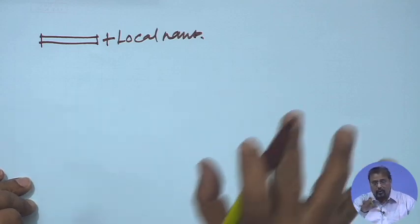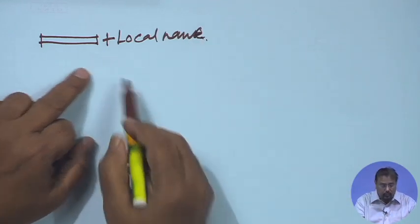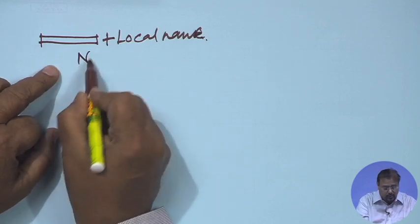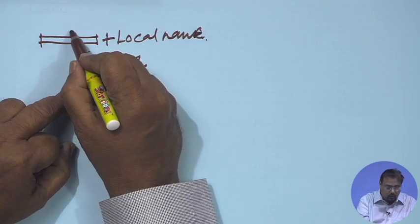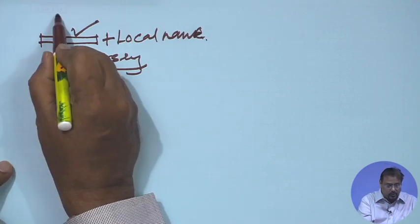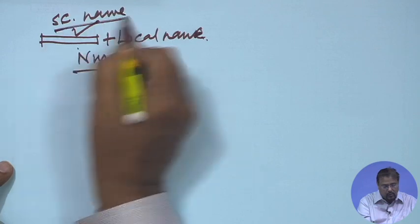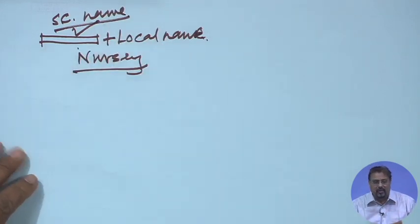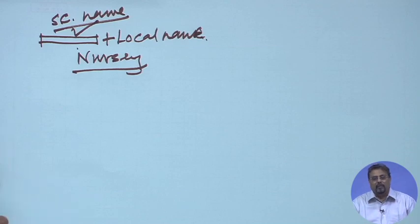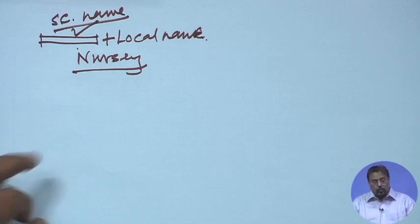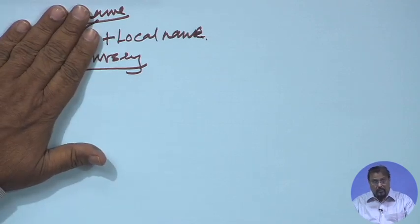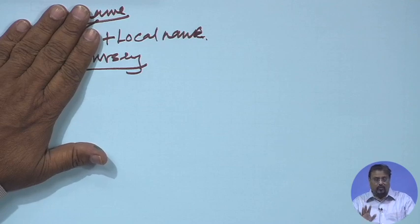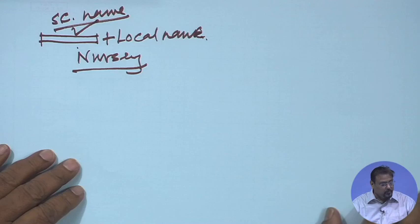People working in that locality are familiar with the local name. But when the tree has to be procured from a nursery or horticulture section, they always refer to it with respect to the scientific name. The scientific or botanical name is the first thing you must know. If you do not give the scientific name, I have skepticism whether your project is going to be rightly executed.